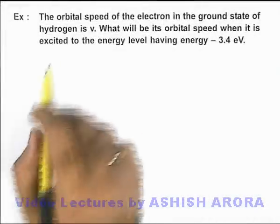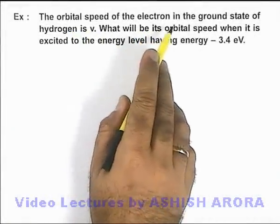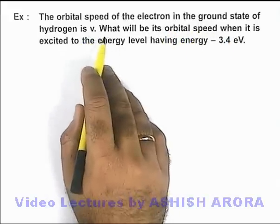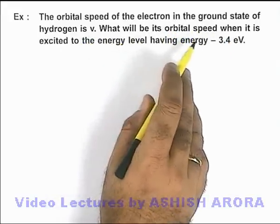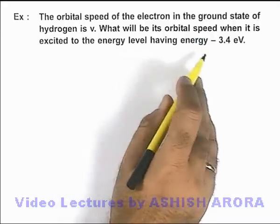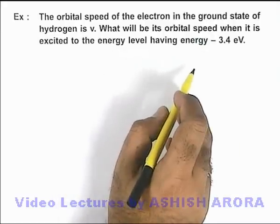In this example, we are given that the orbital speed of the electron in the ground state of hydrogen is v. What will be its orbital speed when it is excited to the energy level having energy equal to minus 3.4 electron volts?